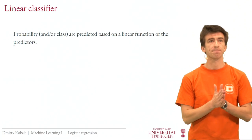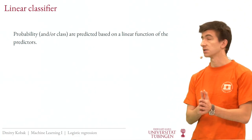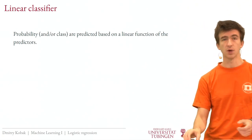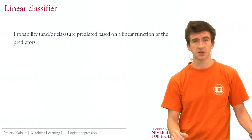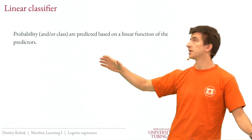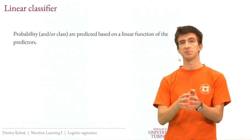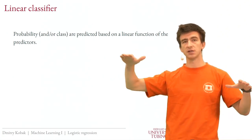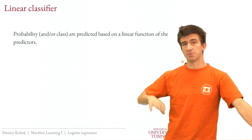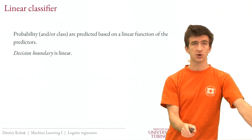Logistic regression is called a linear classifier. Why? The logistic function is obviously nonlinear, but people say this is a linear classifier because the probability is a transformation of a linear function of x: you take x, multiply by beta — that's a linear function — and then apply a nonlinear transformation to squeeze it to the [0,1] range. Before that nonlinear step, you have a linear function of x.